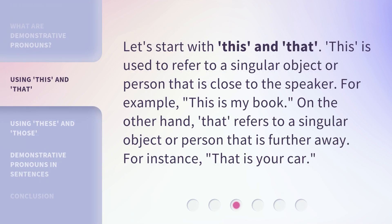Let's start with 'this' and 'that.' 'This' is used to refer to a singular object or person that is close to the speaker. For example: 'This is my book.' On the other hand, 'that' refers to a singular object or person that is further away. For instance: 'That is your car.'